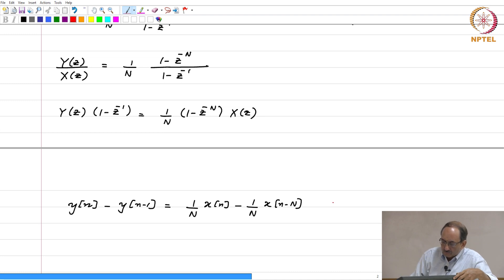this equals 1 over n x of n minus 1 over n x of n minus cap N, and this follows from the delay property. This will be seen very soon.